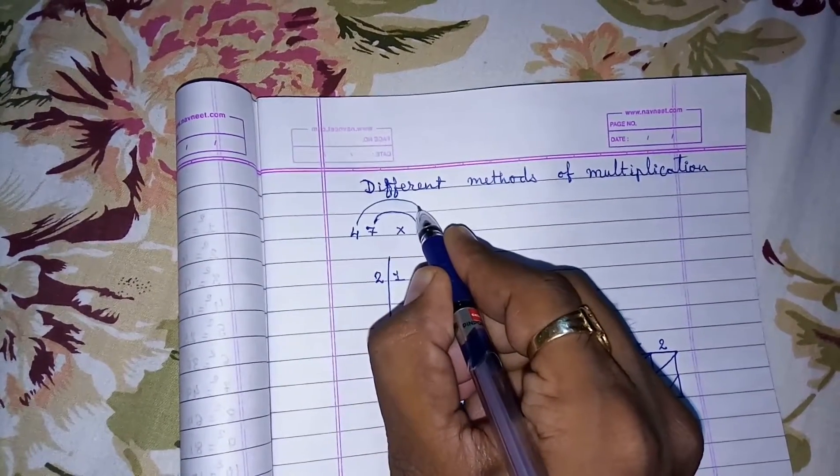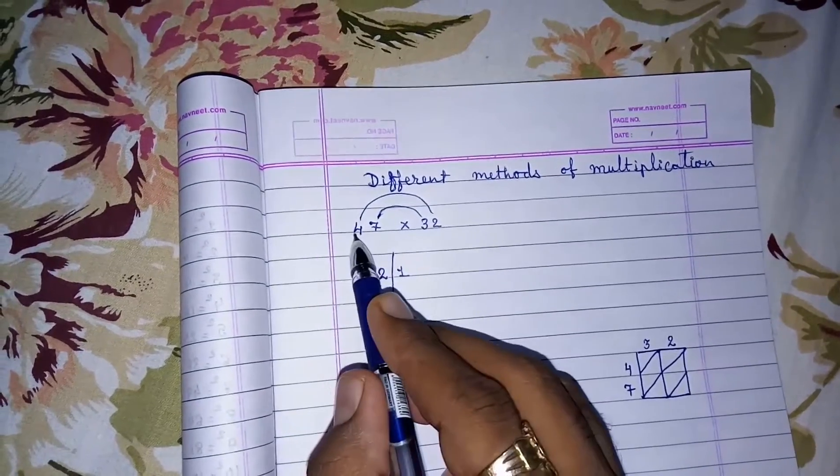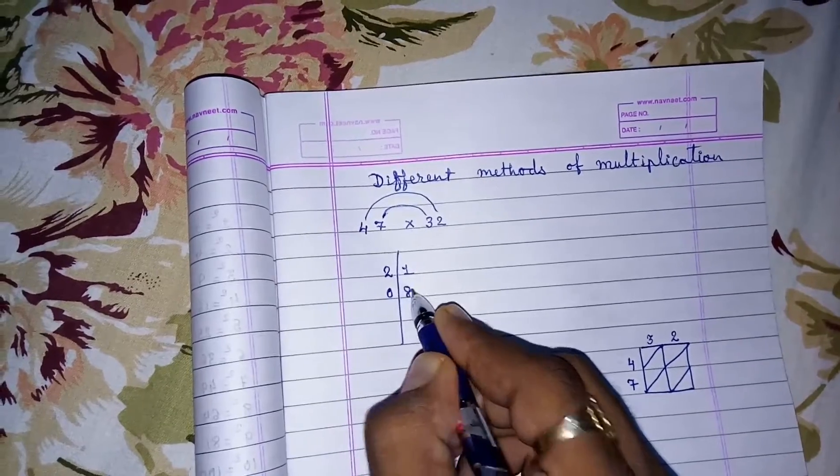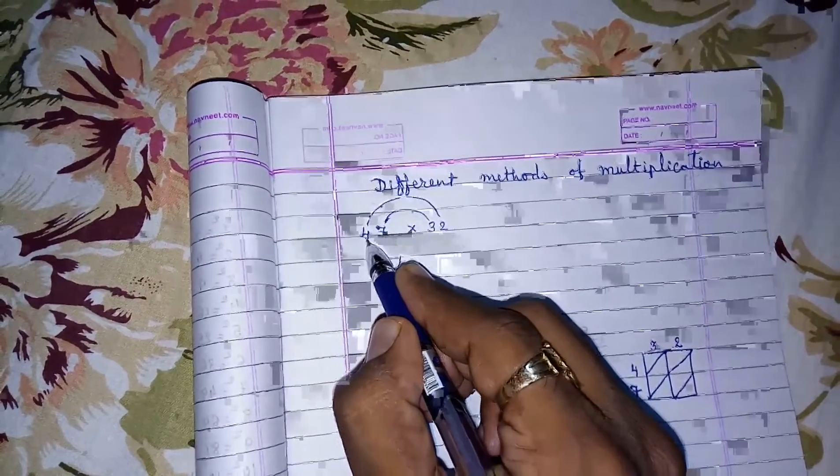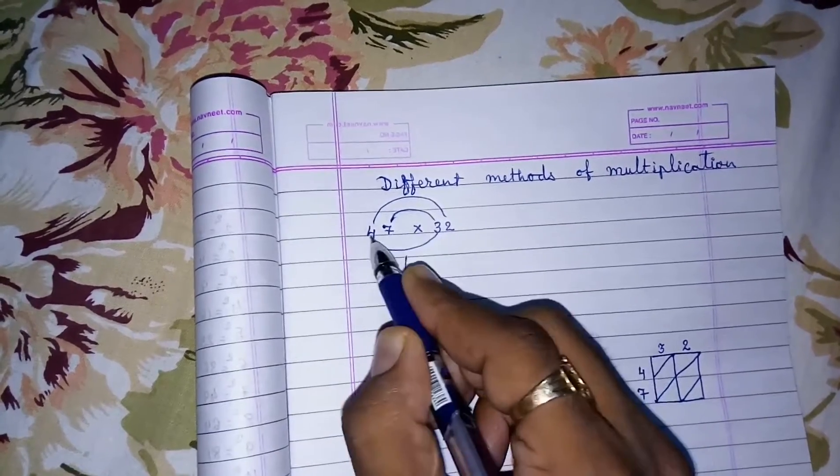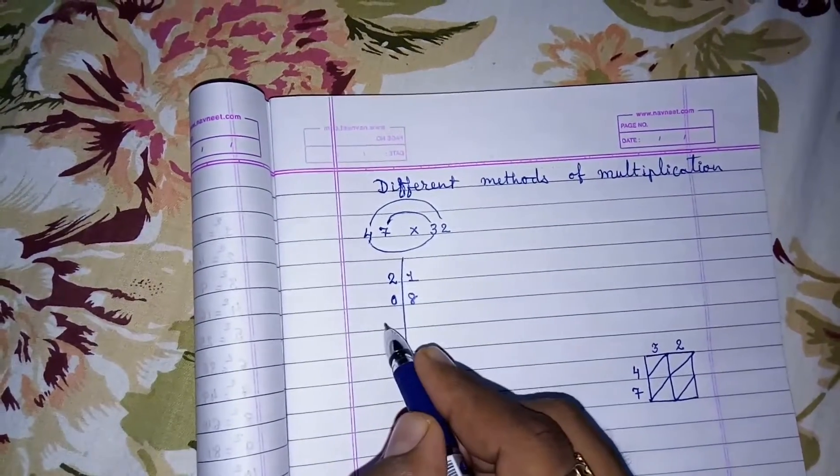Then we have to multiply the first number and the last number: 4 into 2, 8, means 0, 8. Then we have to multiply the first number with the first number: 4 into 3, 12. 12 on the left hand side.